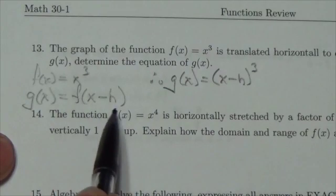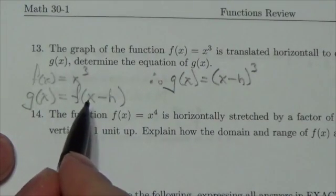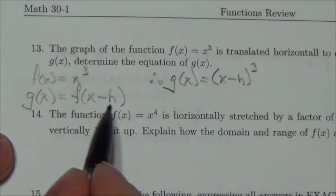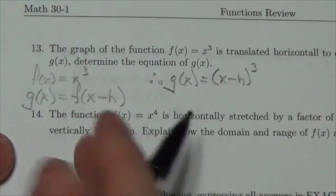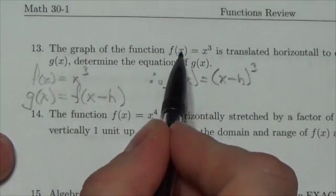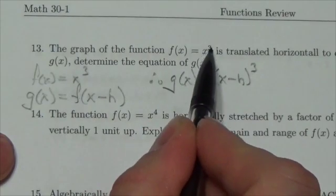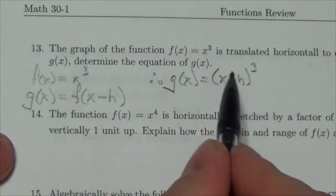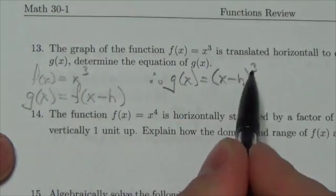Whatever's inside the parentheses here, that acts as the independent variable. So, in this case, it's a little complicated. It's x minus h. It's a binomial. But here, we go from the independent variable to the independent variable cubed. So, now, this is the independent variable. It's just going to get cubed here.